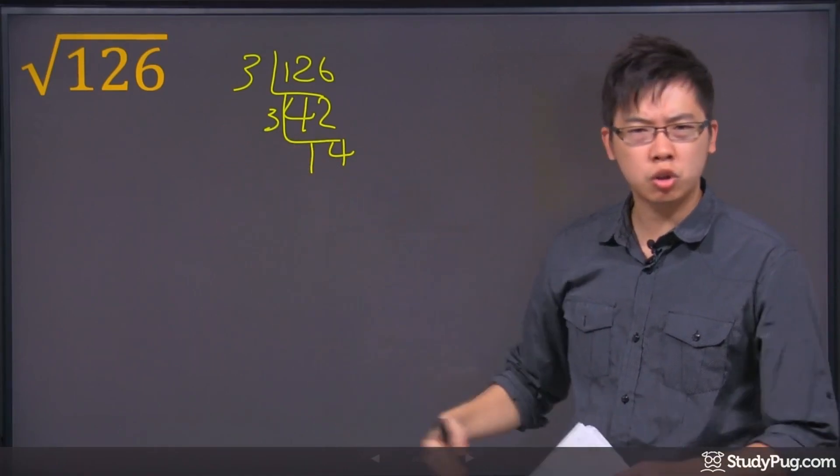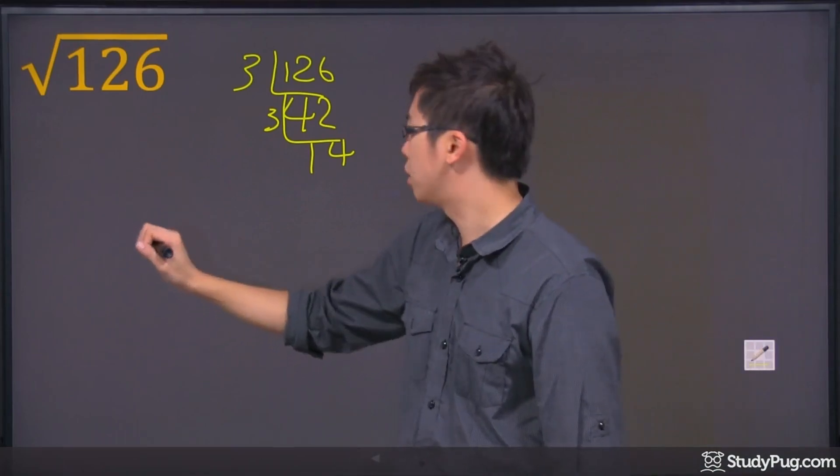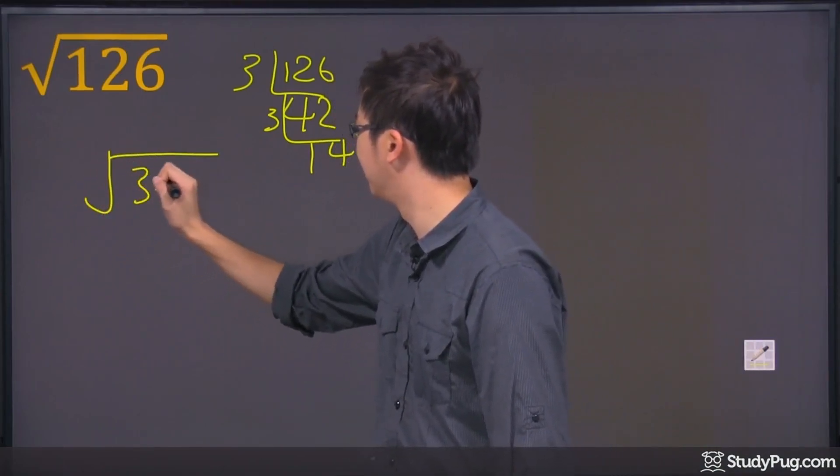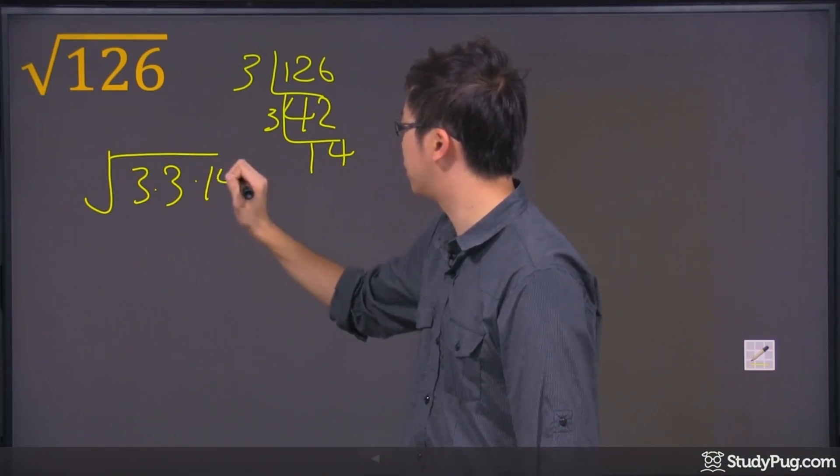We're just going to fill into the radical. I'm going to show you all the steps before we give you the shortcuts. Actually, there is no shortcut for this one. So it'll be 3 times 3 times 14.